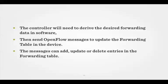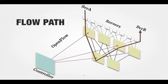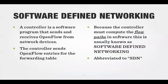It'll match a flow, then take an action. An action can be a rewrite, a drop, a punt, or similar. It also has counters to tell you how many of those things have actually happened. The controller sends those messages down to the network and receives messages back from the switch. The flow path would match a path between Server A and Server B — the controller will have decided that if Server A wants to talk to Server B, it knows how to get there. A controller is a software program that sends and receives OpenFlow packets from your devices, computes the flow paths, and is normally known as software-defined networking.